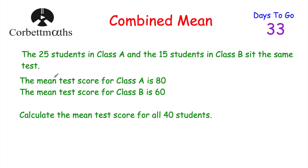Let's have a look at a typical question. We've got 25 students in class A and 15 students in class B, and they sit the same test. The mean score in class A is 80, and the mean test score in class B is 60. We've been asked to find the mean test score for all 40 students.